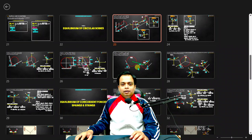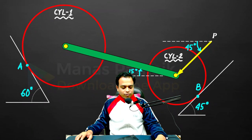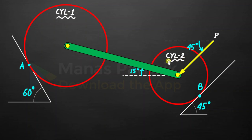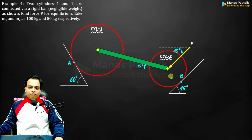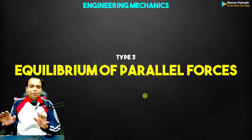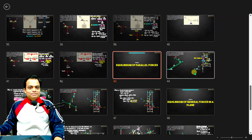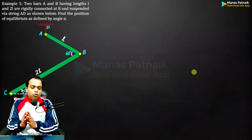The next example involves two cylinders whose centers are connected via a metal bar. You need to find force P that keeps this system in equilibrium — ensuring both cylinders and the metal rod don't collapse. Finally, the third example is based on parallel forces, also called non-concurrent forces, where the lines of action do not pass through a common point. This requires a different approach.